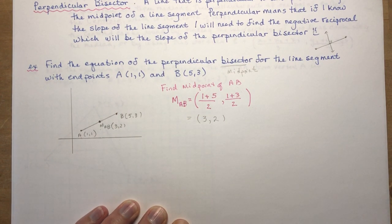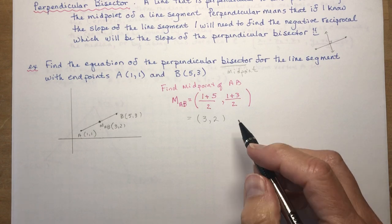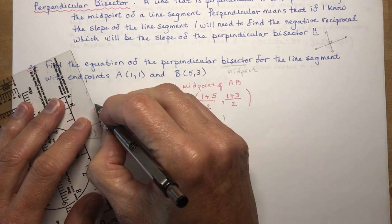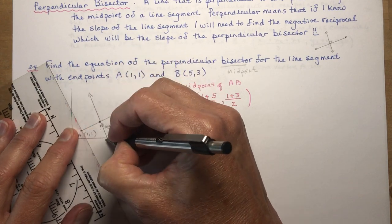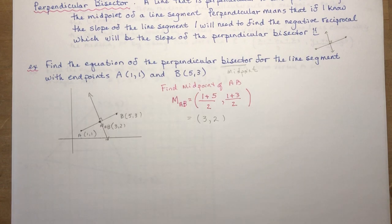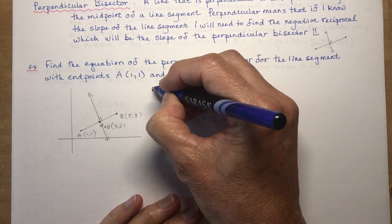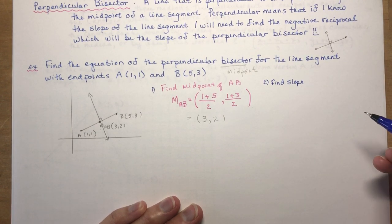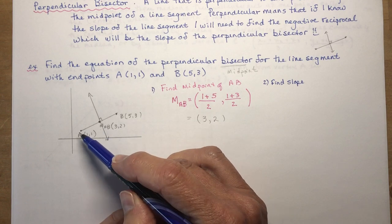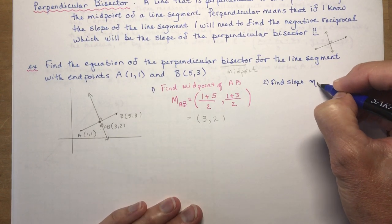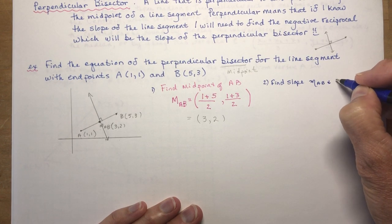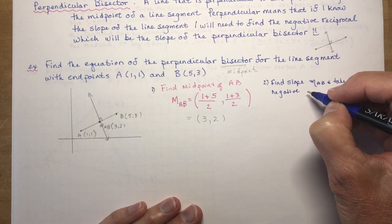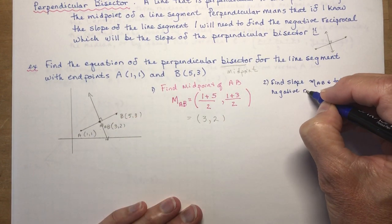Now I want to find the equation of the perpendicular bisector. To find the equation of a line I need the slope and a point. Step two: find the slope. We can't find the slope of the bisector right away without first finding the slope of AB, then taking the negative reciprocal — because a perpendicular line has a negative reciprocal slope.